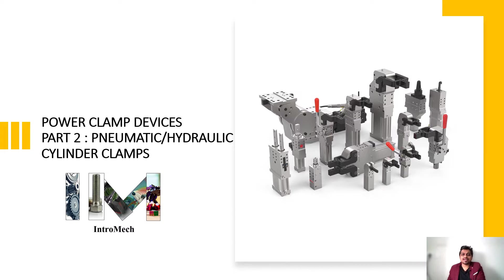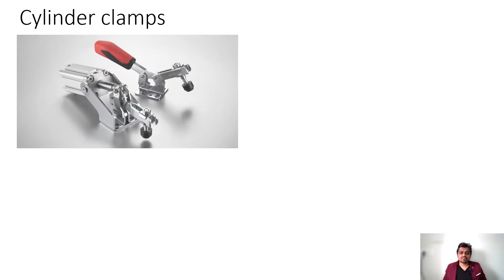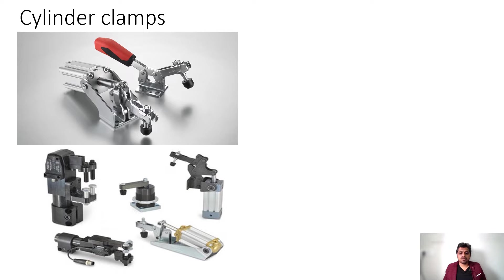Without wasting time, let's get started. We will look at cylinder clamps. Essentially these are clamps — you can see this is the mechanical toggle clamp — and what we have done is modified it with the help of a cylinder so that it gives some automation and also gives some additional holding capacity. We can have different arrangements in this, and you can see the different arrangements.